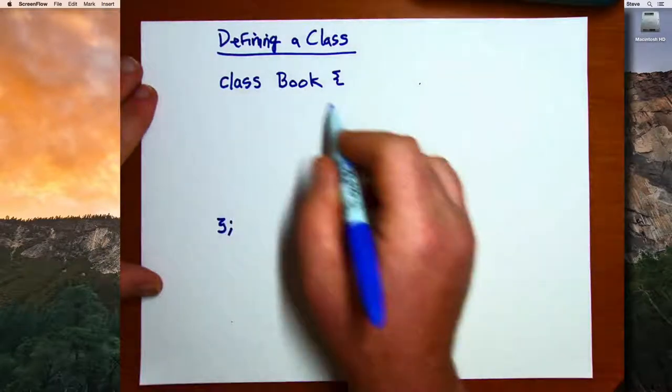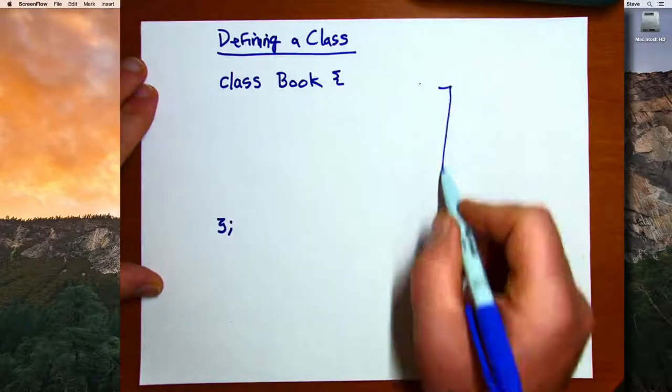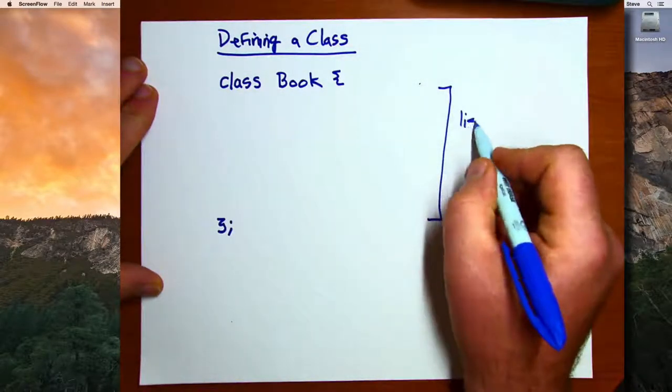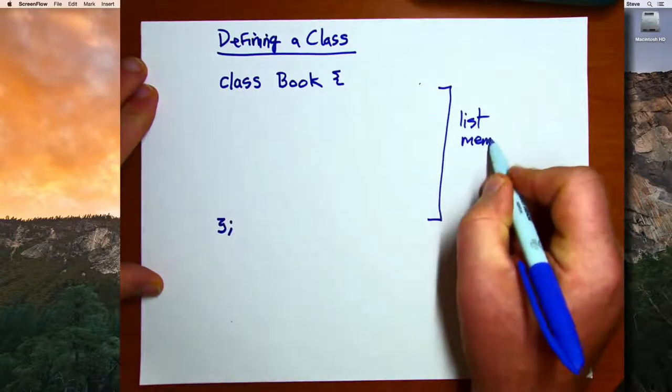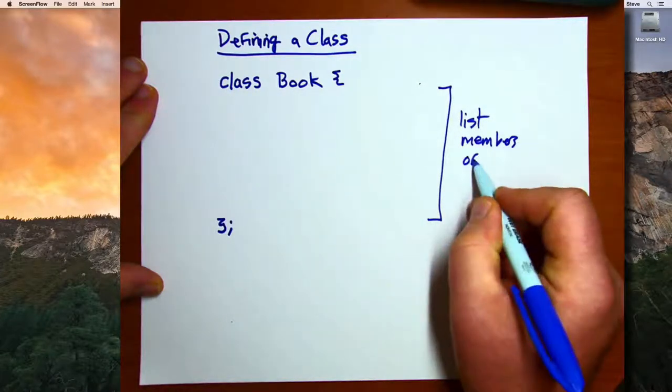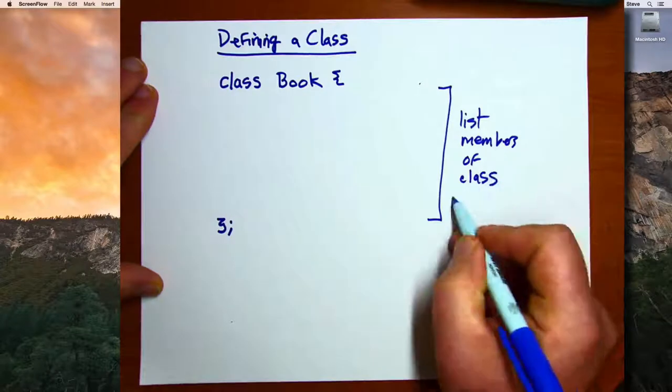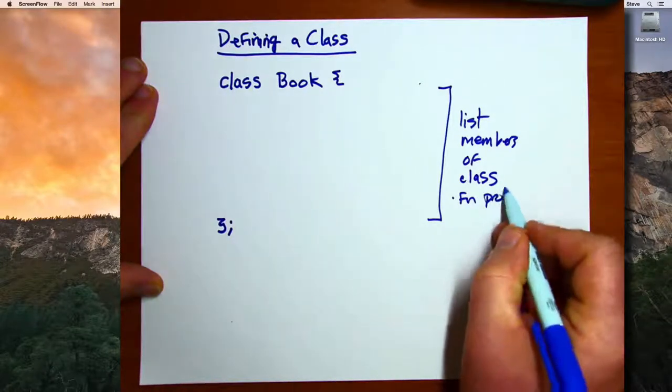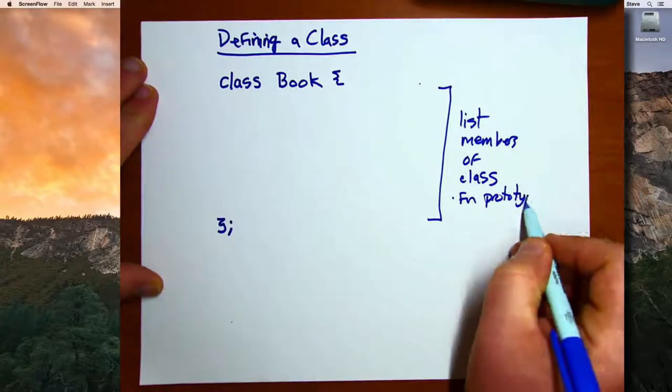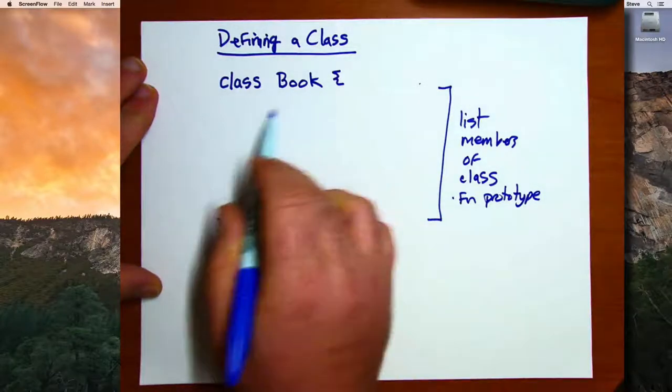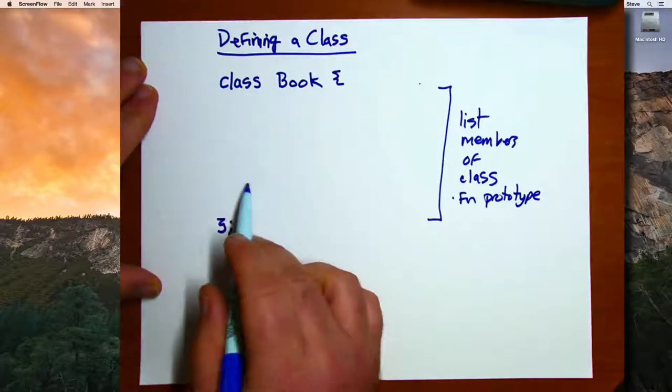Then inside here, we list the members of the class. And those can either be function prototypes, where we give the prototype or header for a function that we'll define later, or can be a variable.